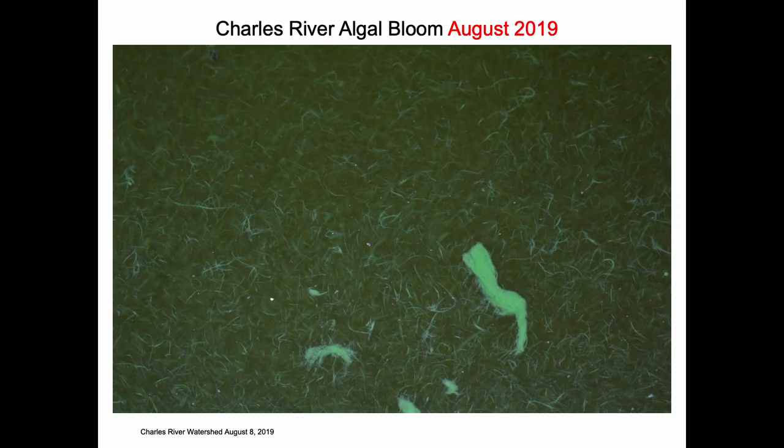This is the Charles River, August 2019. This is the largest algal bloom I think that we've had out there. It actually stretched from the BU Bridge to the Museum of Science. Cyanobacteria was detected. This is a health problem.